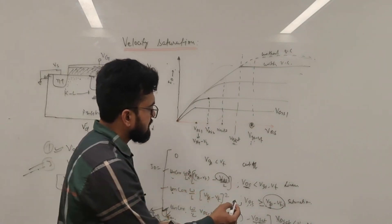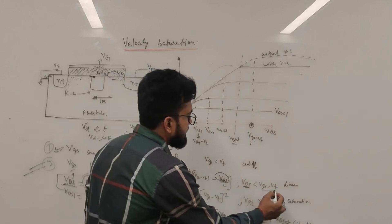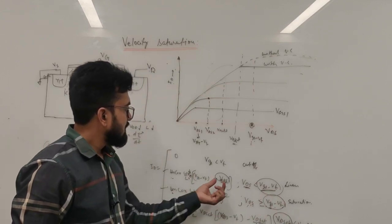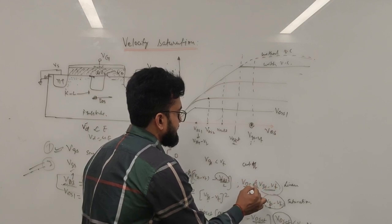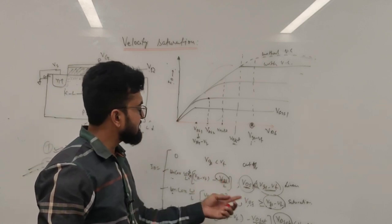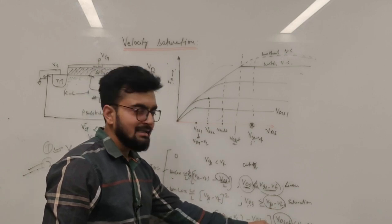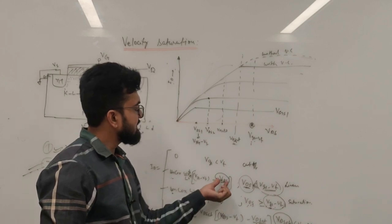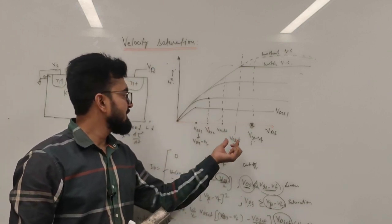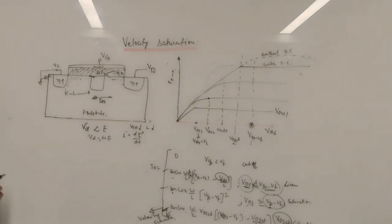To combine all three equations into one, we look at which quantity is smallest among the three conditions. Whichever is lesser appears as the effective VDS voltage. If VGS minus VT is less, we replace VDS with VGS minus VT. If VDSat is less, VDS is replaced by VDSat. So that voltage is simply the minimum of VDSat, VGS minus VT, and VDS.